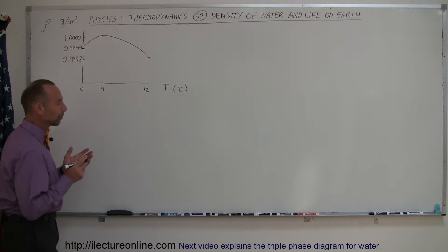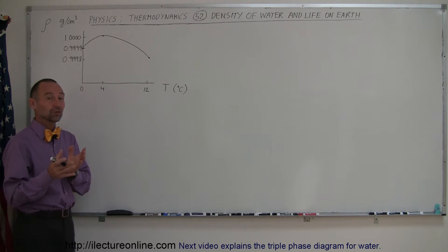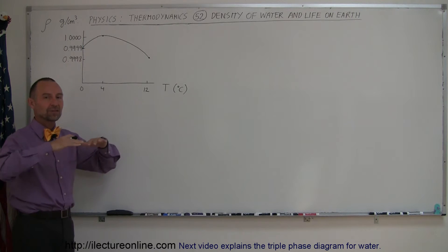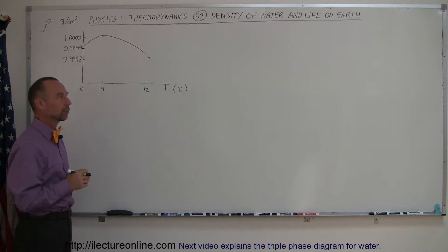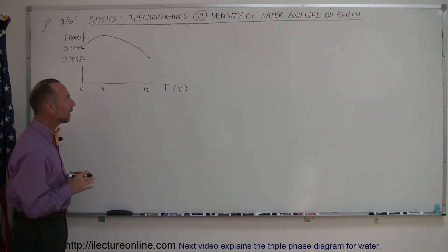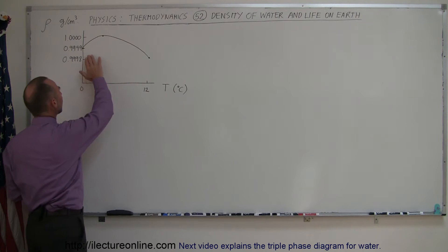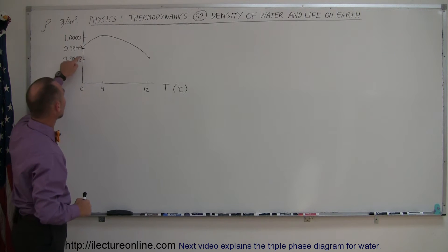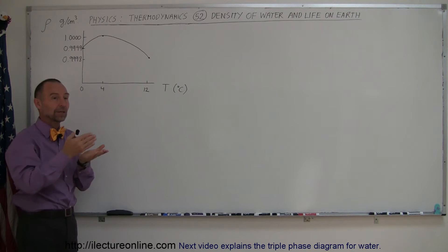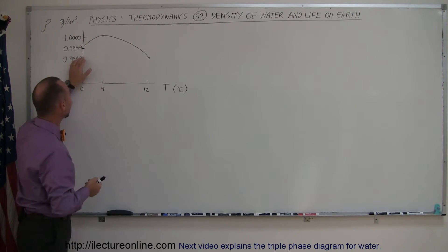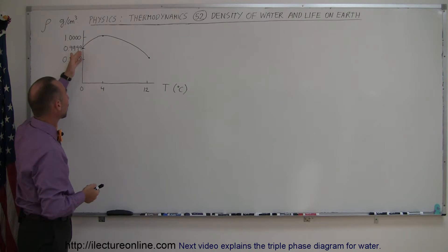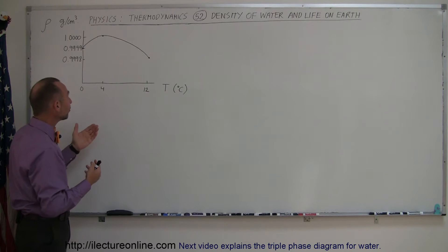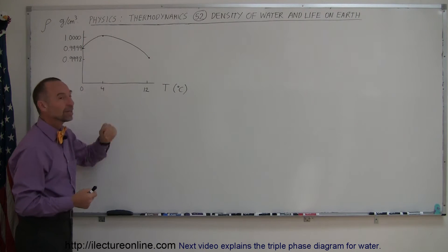What we find is, first of all, when water turns into ice, when water freezes, it expands, which means that ice will float on top of the water. In addition to that, water is most dense when it's about 4 degrees centigrade, which means when it's 0 degrees centigrade — when ice turns into water — it is less dense than when the water reaches a temperature of 4 degrees. That's a very strange phenomenon. After that, the density of water begins to decrease again.